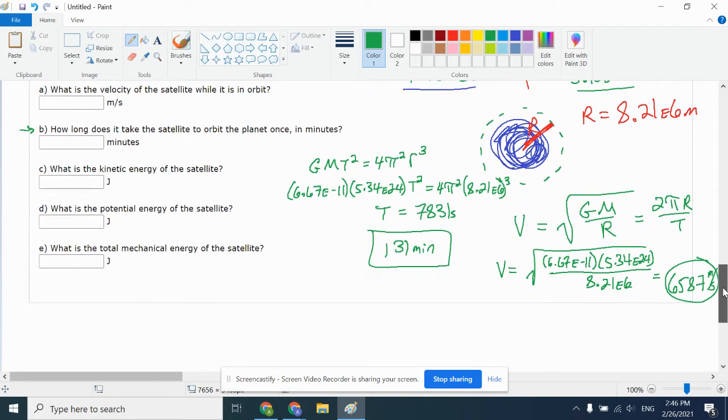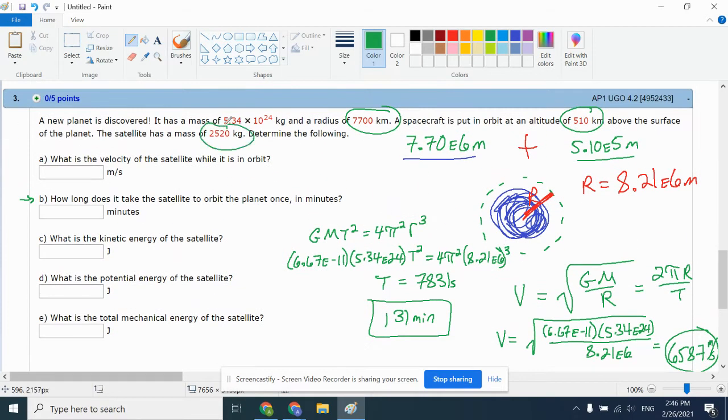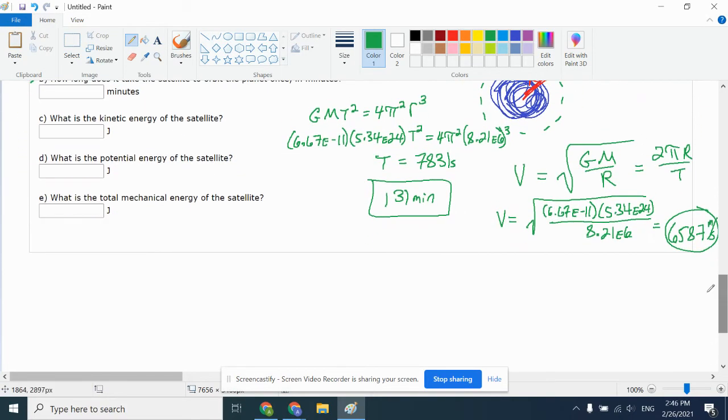Moving on, it says C, it wants to know what's the kinetic energy of the satellite. Let's remind ourselves the satellite has a mass of 2520. So the kinetic energy of the satellite is 1 half MV squared. 1 half 2520 as the mass, V is 6587, that's what we solved in part A. 1 half by 2520 times 6587 squared. The result is you get 5.47E10 joules. That's your kinetic energy.